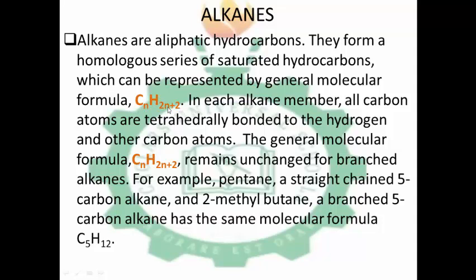If you want to find any member of the alkanes, where n is greater than or equal to 1, you substitute n into the formula. If you put 1 in place of n, you have CH4, because 2 times 1 is 2, plus 2 equals 4. So that is the first member. The second member, ethane, has n equal to 2.